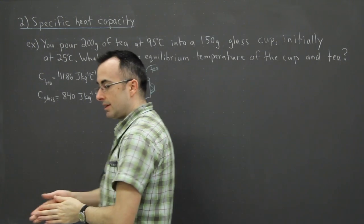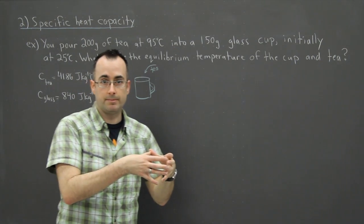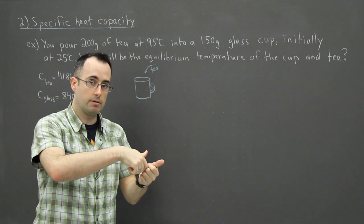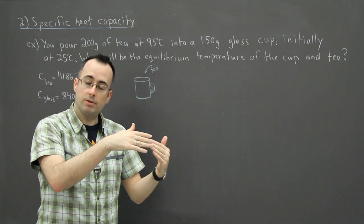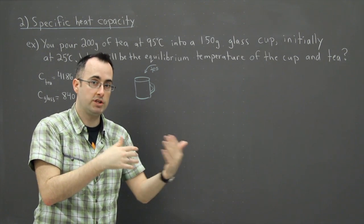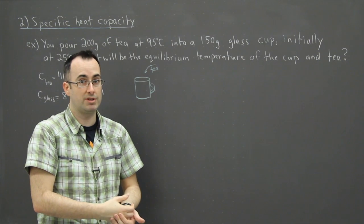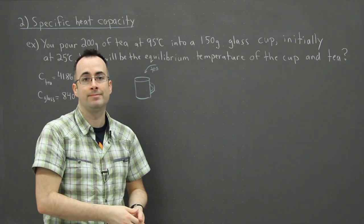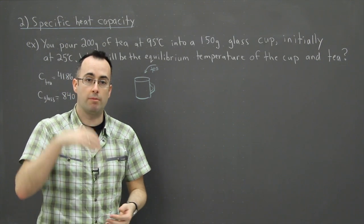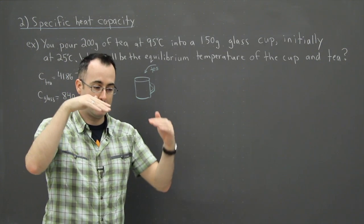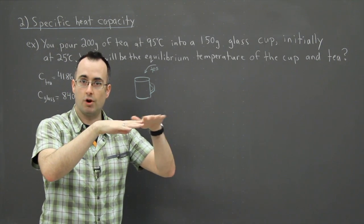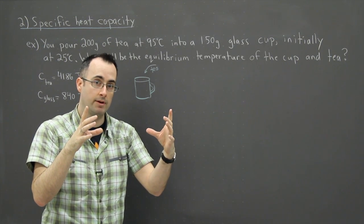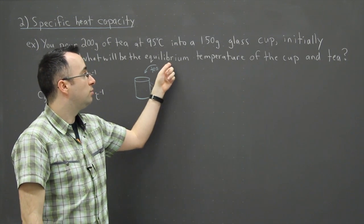The glass is at a certain temperature and the tea is at another temperature. You're going to put them together, and because they're at different temperatures there's going to be energy transfer between the two. That's heat, because heat is a transfer of energy. Eventually the two will have transferred all the energy and they'll sit still at one temperature. That's what we call the equilibrium temperature.